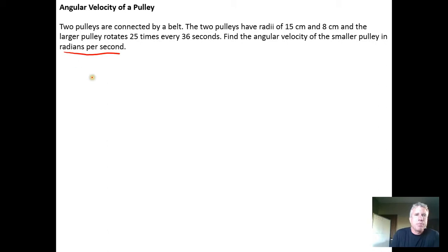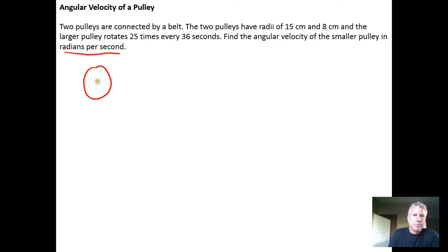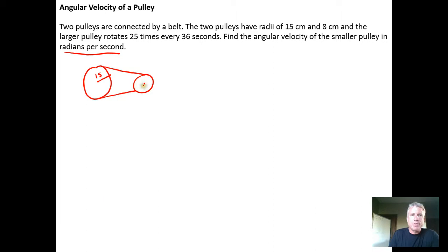The first step is to draw a picture of the two-pulley system — always draw the picture first. Here's the larger pulley with a radius of 15 centimeters, connected by a belt to a smaller pulley with a radius of 8 centimeters.